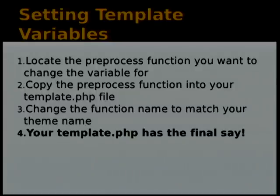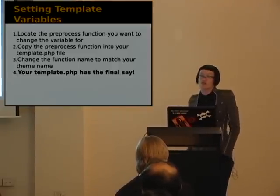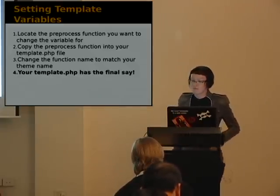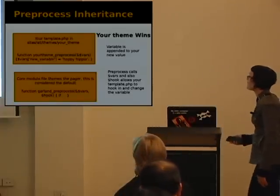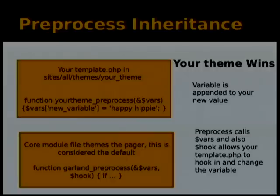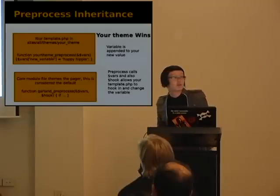Setting template variables with pre-process functions: a pre-process function enables you to change variables for your theme. Copy the pre-process function, put it into your template.php file, change the name to match your theme, and your template.php will have the final say. Pre-process is stacked rather than overriding — you're hooking into it and changing a variable, like making a variable equal to 'happy hippie', which then gets applied in your theme without rewriting the whole function.